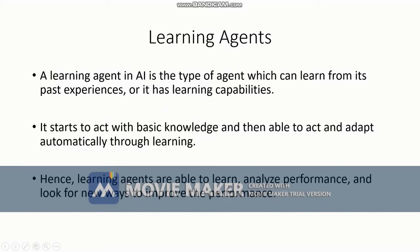A learning agent starts to act with basic knowledge and is then able to act and adapt automatically through learning. If it commits a mistake, it will learn from that and make sure that next time if the same scenario occurs, it will not perform the same mistake again. Hence, learning agents are able to learn, analyze performance, and look for new ways to improve.